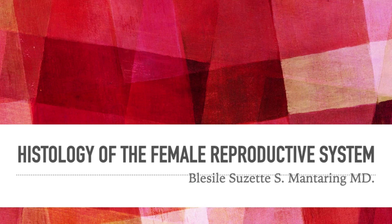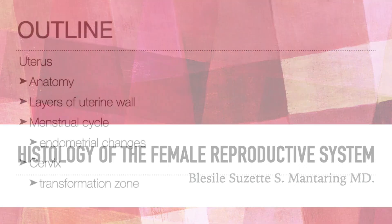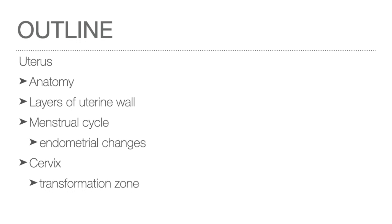This is the second part in the lecture of the histology of the female reproductive system. The histology of the uterus will be discussed, beginning with a brief description of its anatomy followed by its histological appearance. The menstrual cycle will be discussed and correlated with endometrial changes secondary to hormonal changes. The histology of the cervix follows, with description of the transformation zone and its clinical significance.